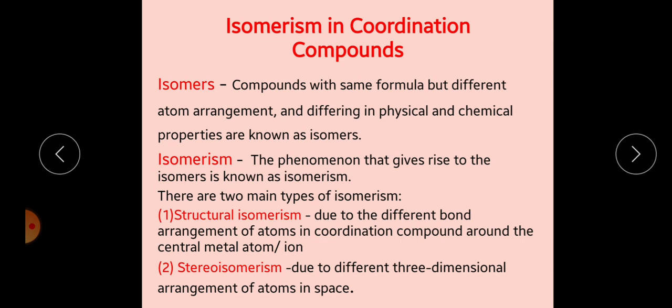There are two main types of isomerism. The first one is structural isomerism and the second one is stereoisomerism. Structural isomerism arises due to different bond arrangement of atoms in coordination compounds around the central metal. The origin of structural isomerism is the arrangement of atoms in coordination compounds around the metal, where the ligands or atoms change their arrangement.